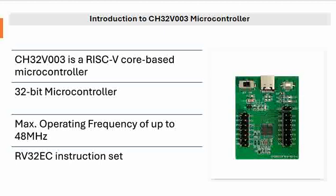RISC-V based microcontrollers are different from the ARM controllers we see in the market. RISC processors are generally intended for low-level applications. We have a video on RISC vs ARM on our channel. The CS32V003 is a 32-bit microcontroller with a maximum operating frequency of up to 48 MHz. It follows the RV32EC instruction set, which we'll discuss in upcoming videos.